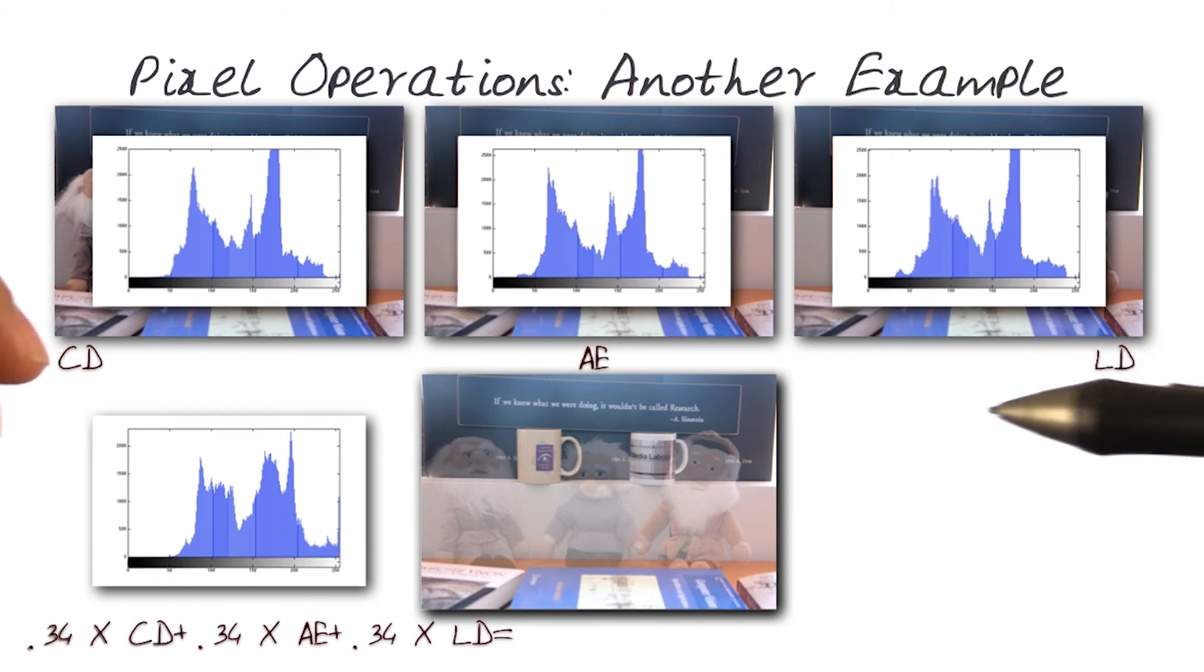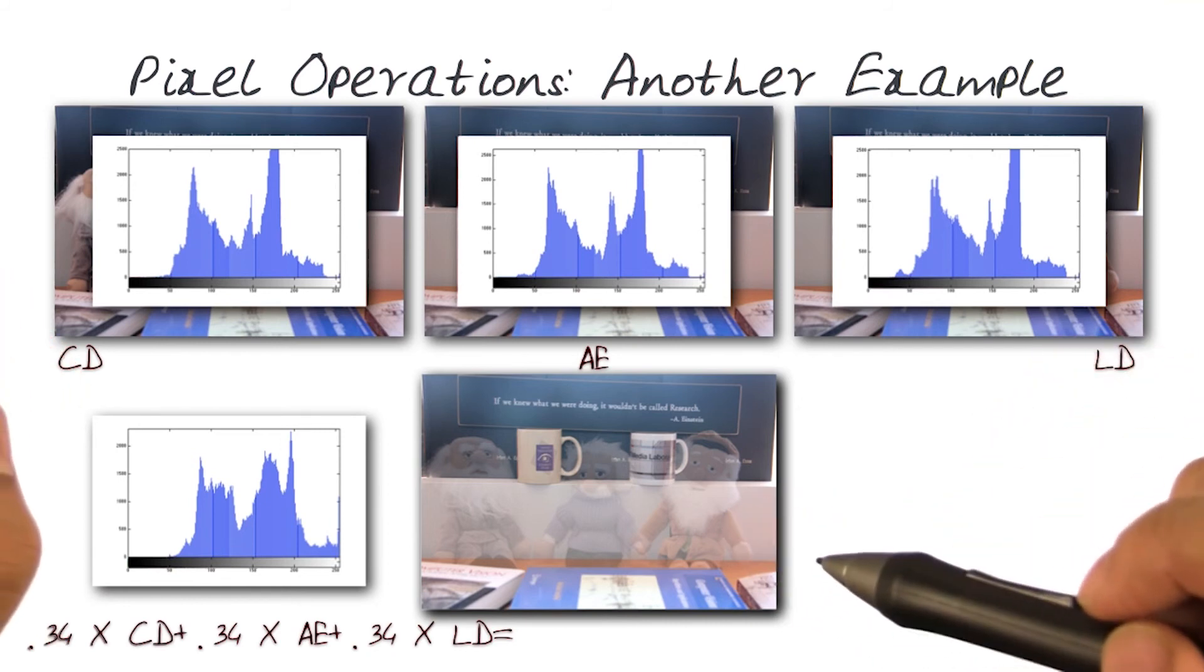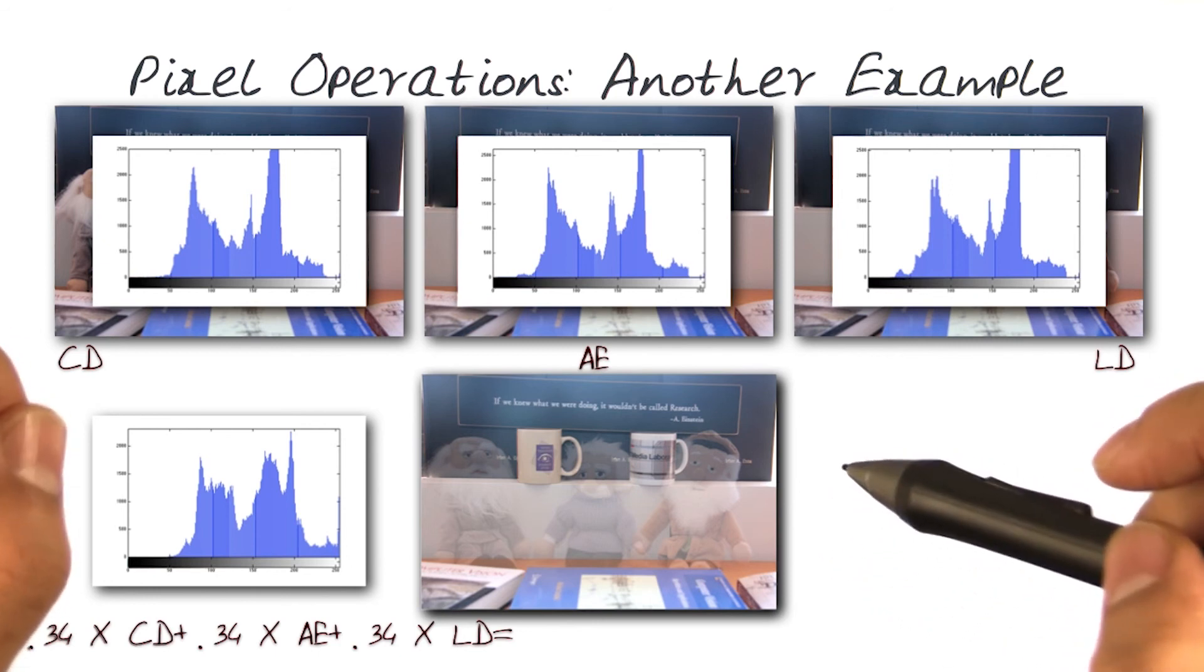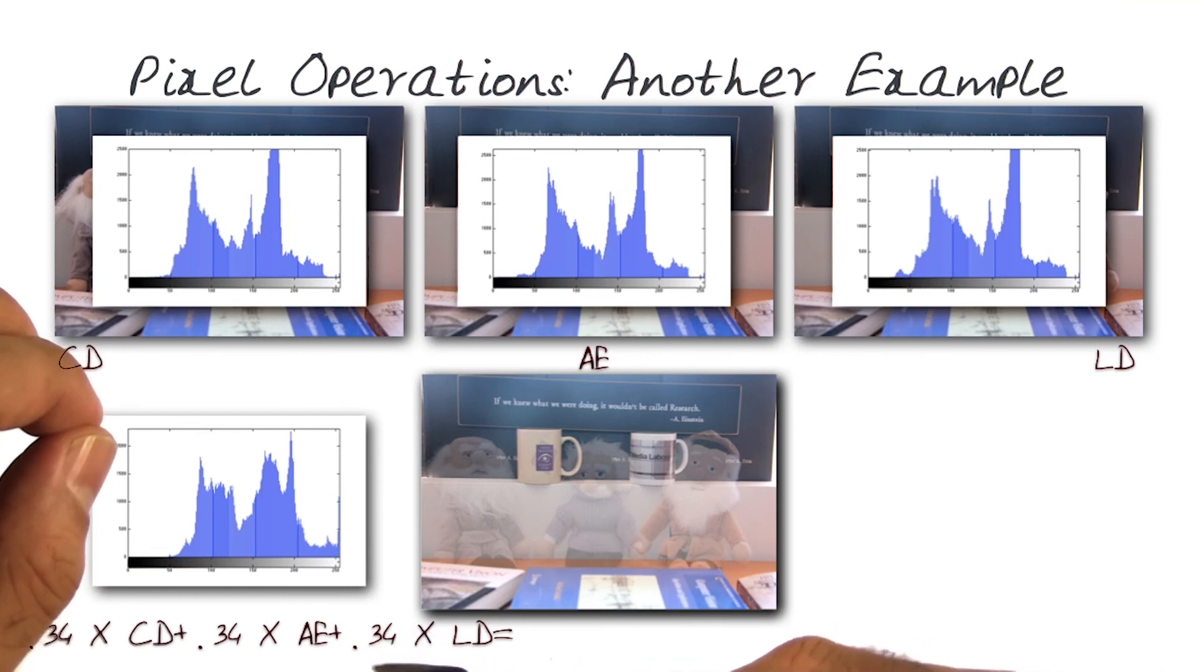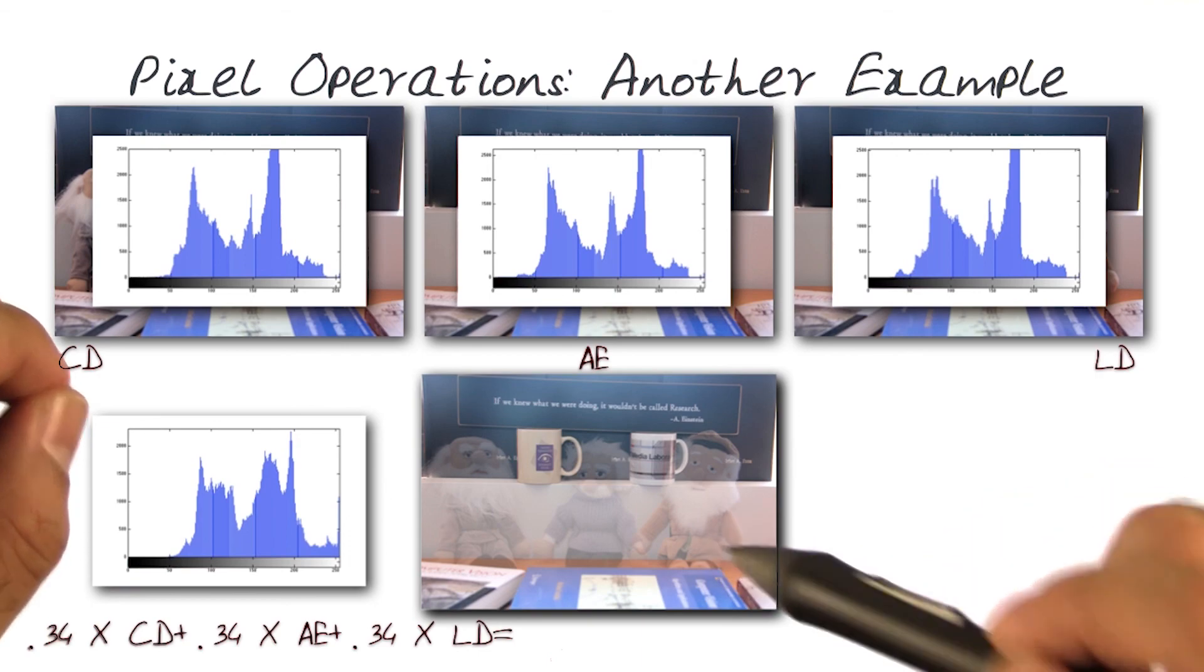So that's the thing that we wanted to get out of this. By doing these pixel operations and by combining them with a number like 0.34, before I do any of the additions, I've added a little bit of transparency.